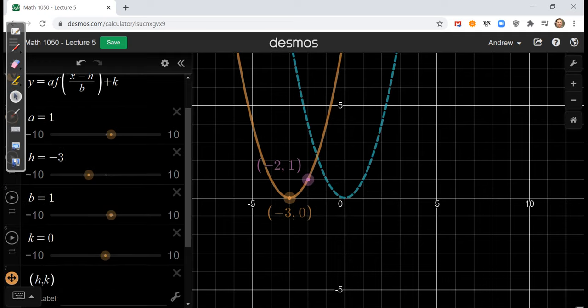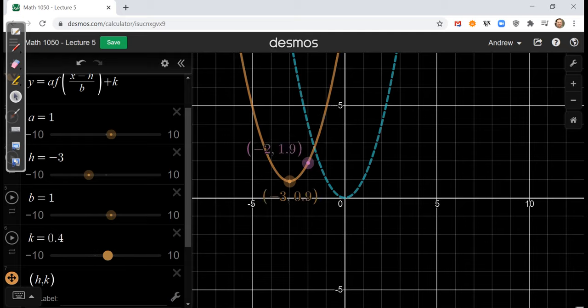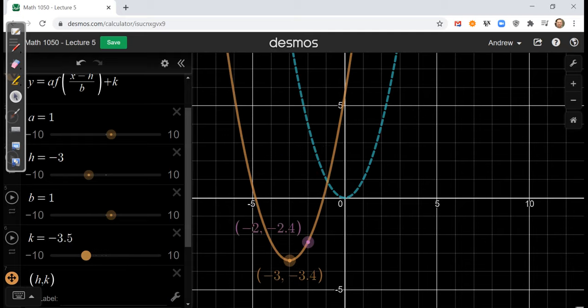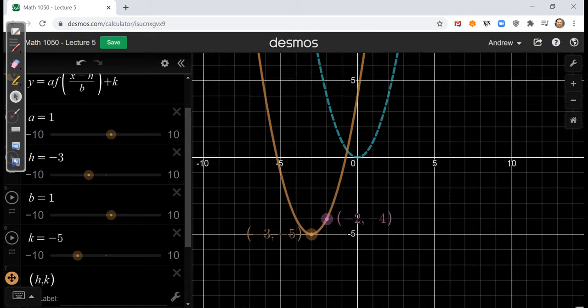And then for k, k is going to control the move up and down. So we had a negative 5 right there. So we're going to move this thing down by 5. Oh, that's moving it up, moving it down by 5. So we should have a negative 5 right there. Went off the screen a little bit. And I'll zoom out.